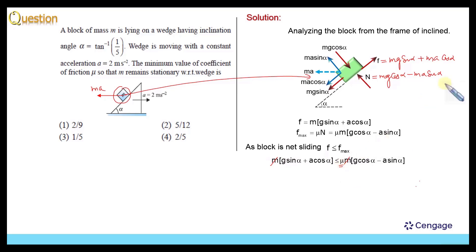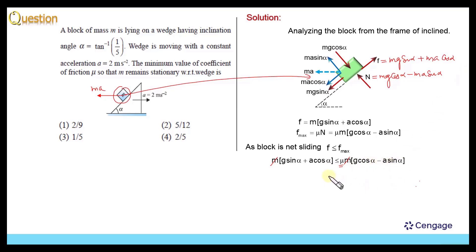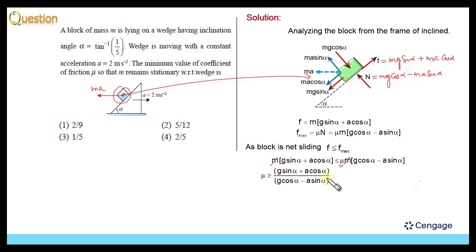Now we can get the value of μ. So here we can write: μ = (G sin α + A cos α) / (G cos α − A sin α). This is the value of μ, and here we can take cos α as common because we are given the value of tan α.